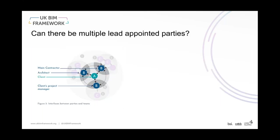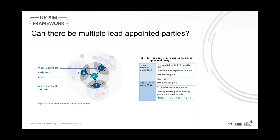Can there be multiple lead appointed parties? The answer is absolutely yes, and the vast majority of the time there often will be. For example, at any one stage you could have an architect as lead appointed party, a main contractor as lead appointed party, and a client's project manager as lead appointed party. Looking at the ISO, there are a number of resources required during the tender response phase, and these are firmed up with additional resources during the appointment phase. For the client's project manager, most resources would apply — a BIM execution plan is essentially a method statement for how you're going to deliver and exchange information, and a client's project manager is delivering information, albeit proportionally less complex.